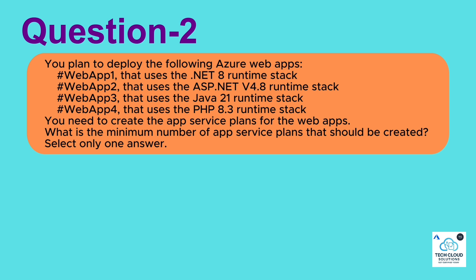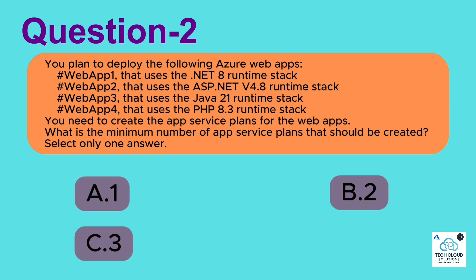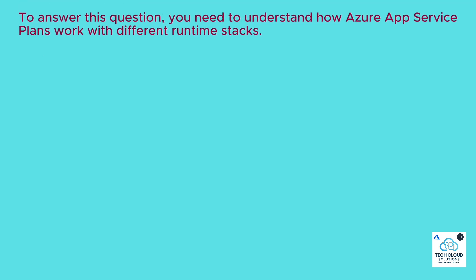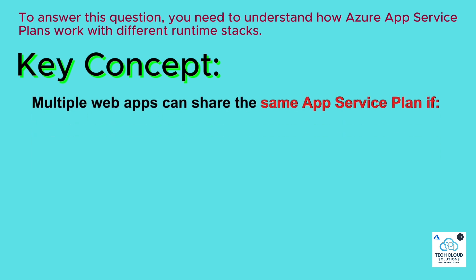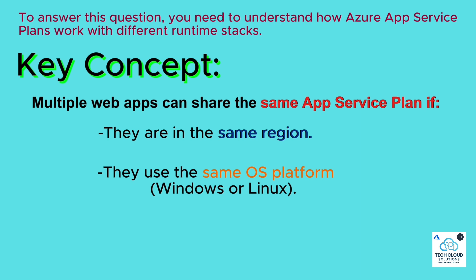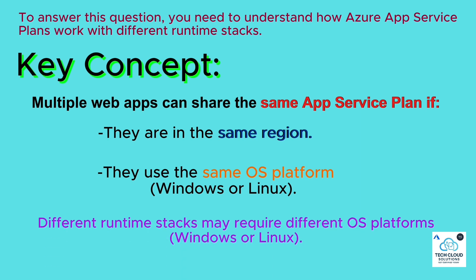Select only one answer: A. 1, B. 2, C. 3, D. 4. To answer this question, you need to understand how Azure App Service Plans work with different runtime stacks. Key concept: multiple web apps can share the same app service plan if they are in the same region and use the same OS platform — Windows or Linux. Different runtime stacks may require different OS platforms.